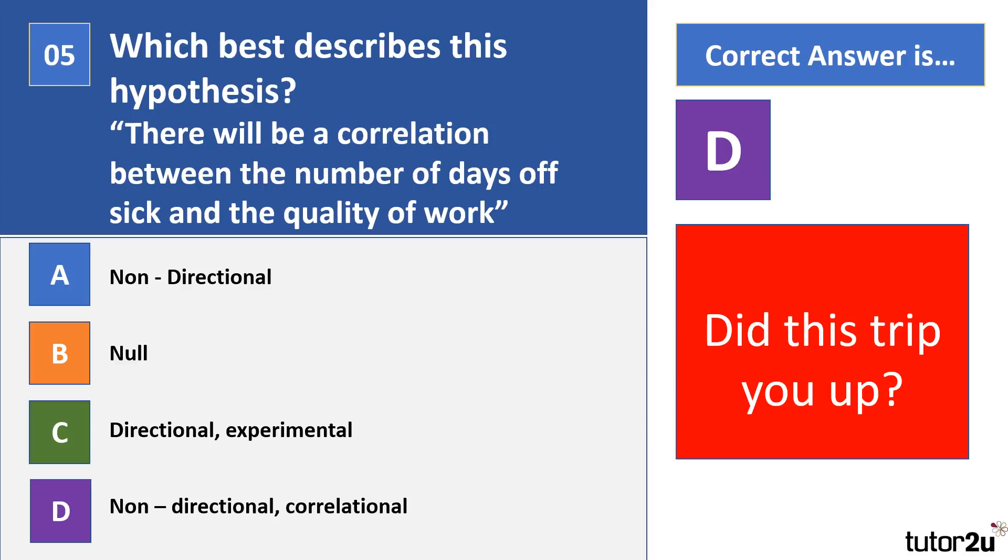Now you need to know the difference between an experimental and a correlational hypothesis. If it's a correlational hypothesis, it might have the word correlation or relationship in it. Remember, in correlations we have co-variables instead of the IV or DV. So if it's a non-directional correlational, it's going to say that there will be a relationship or there will be a correlation but not state the direction of the correlation.